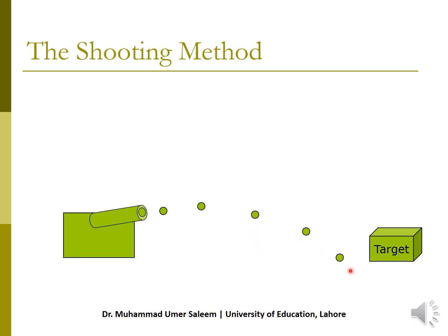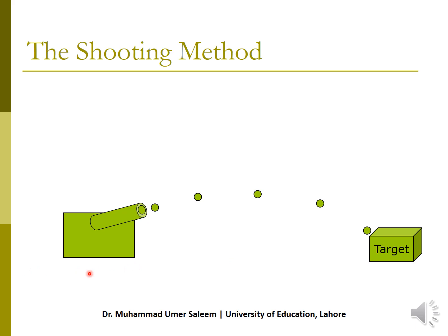I change the angle again and fire once more. If you look, it hits the target. So this is the physical interpretation: the cannon is inclined at a certain angle, and that angle represents the derivative — the slope.